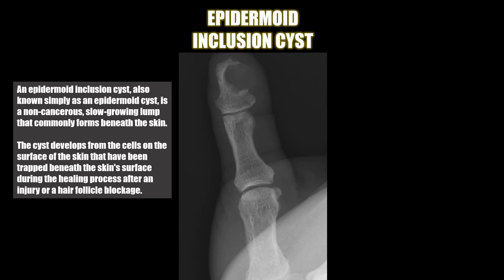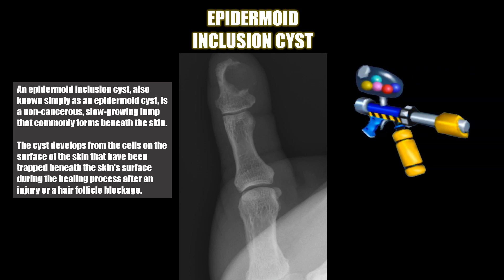Case number four is an epidermoid inclusion cyst at the tip of the thumb. An epidermoid inclusion cyst is a non-cancerous, slow-growing lump that commonly forms beneath the skin. These can happen following trauma. This individual liked to use paintball guns and would test the strength of his paintball gun with his thumb, and over time this caused an epidermoid inclusion cyst.